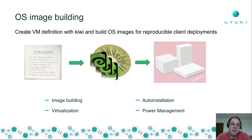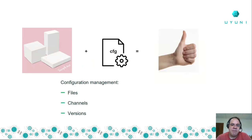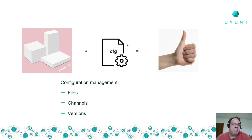Another great feature of Uyuni is building operating system images. If you are going to repetitively deploy the same thing over and over, you can create a virtual machine definition with Kiwi, put it in a Git repository, build an OS image, and use that as a template. After deploying the image as a template, you use configuration management with either Salt or Ansible to deploy the right configuration files or settings to the cloned templates. So you create a template, deploy it, and configure the specifics for those five, ten, or hundreds of servers.